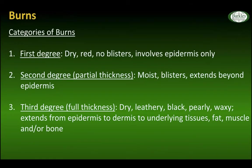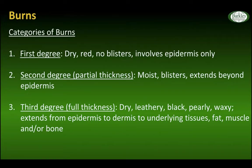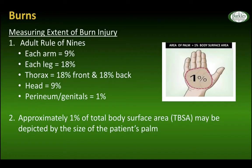Now let's move on to burns. First degree: dry redness, no blisters, involves just the epidermis only. Second degree, also known as partial thickness — remember that term — has blisters; it extends beyond the epidermis. Third degree is full thickness injury: dry and leathery, can be black or pearly and waxy, extending from the epidermis to the dermis to underlying tissues — fat, muscle, and/or bone. For measuring the extent of burn injury in adults, the rule of nines: each arm is 9%, each leg is 18%, thorax is 18% front and 18% back, head is 9%, and perineum/genitals about 1%.